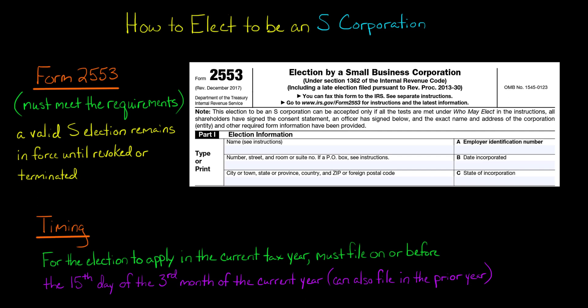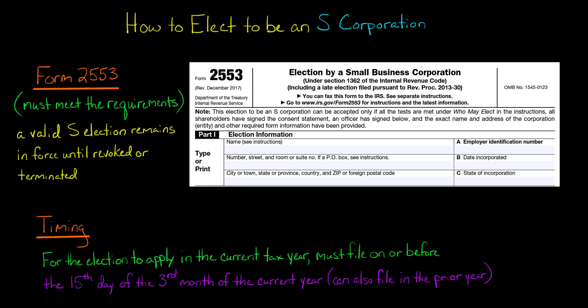In this video, I'm going to discuss how to make a valid election to be treated as an S-Corporation. Assuming that you meet the requirements to be an S-Corporation, which I've discussed in a previous video, you're going to make the election by filing Form 2553 with the IRS.